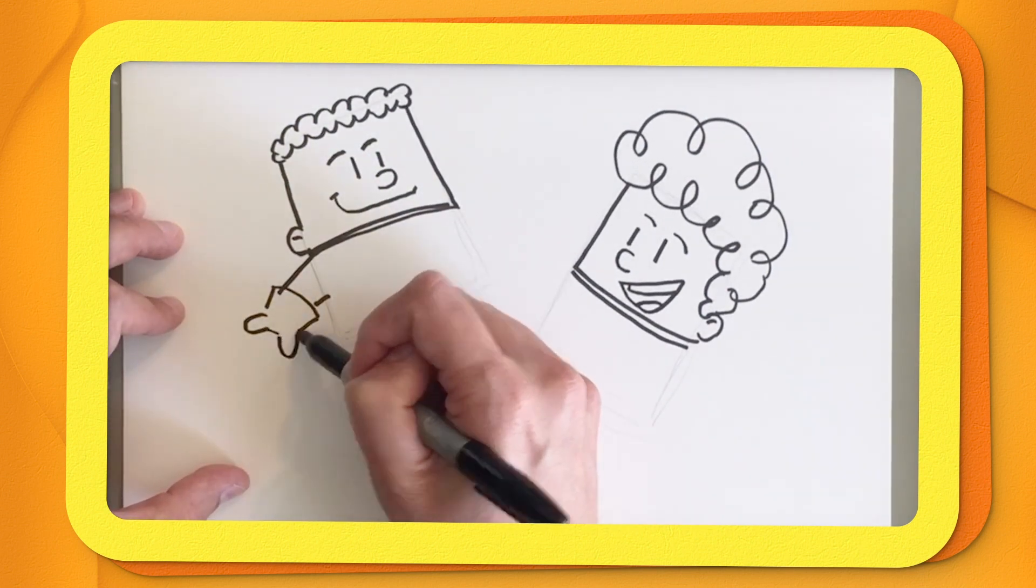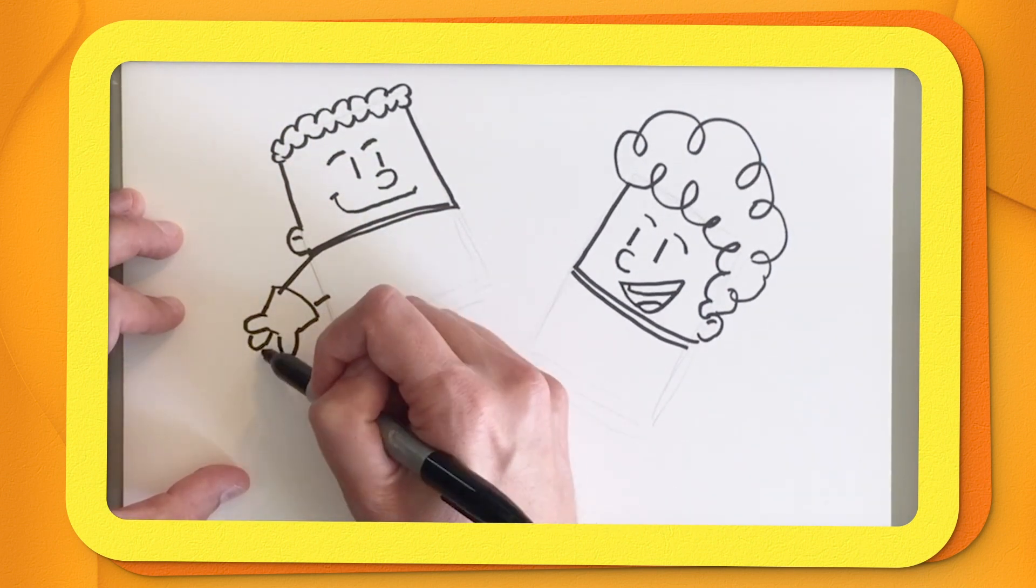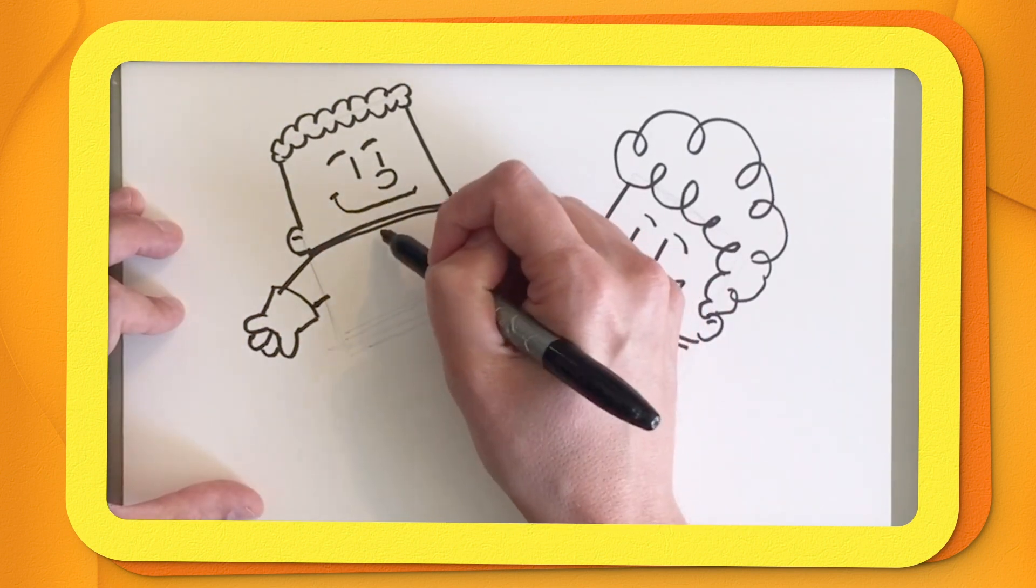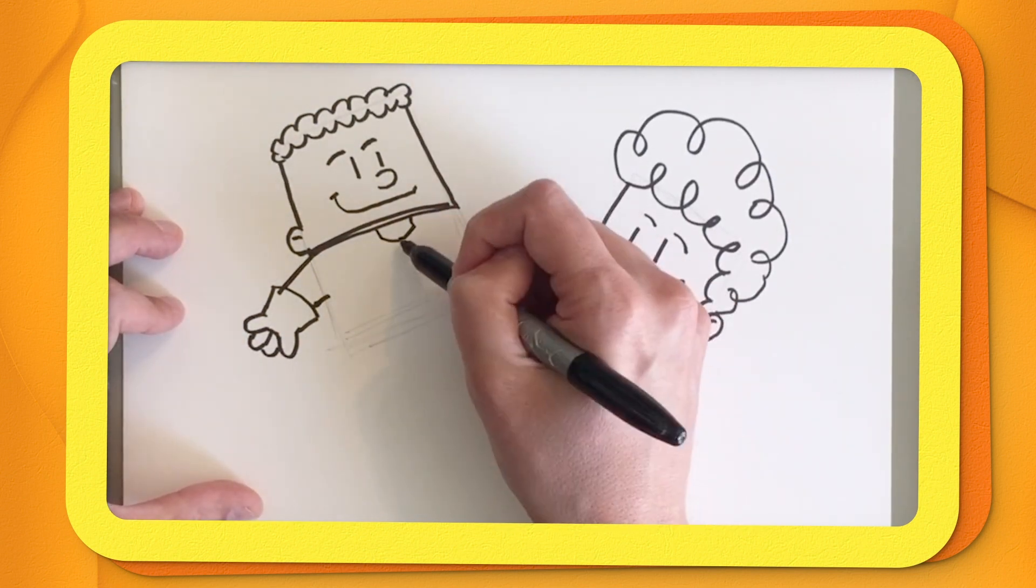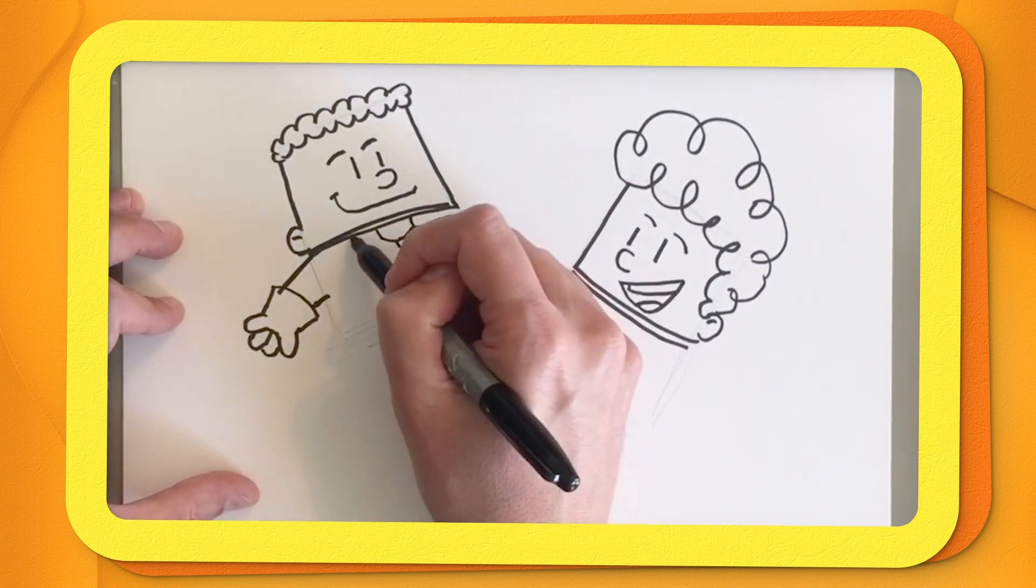George will have his arm kind of stick out like this. And then we're going to give him some little fingers. And then, of course, he's got a tie. So we've got to get that tie on the outside of his space suit because that's funny.